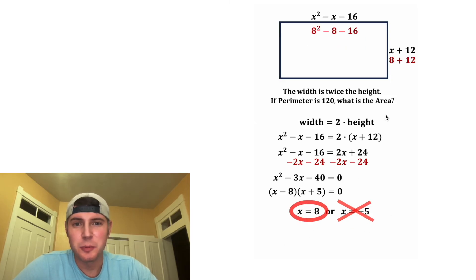Next, let's try x = 8. Plug in 8 for all the x's. We get 20 for the height, and 8² is 64, minus 8 is 56, minus 16 is 40. 40 is twice as big as 20, and for the perimeter, 40 + 20 + 40 + 20 does give us 120, so x = 8 is our solution.